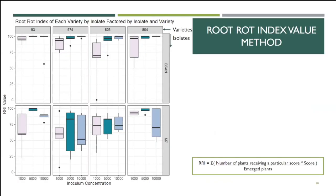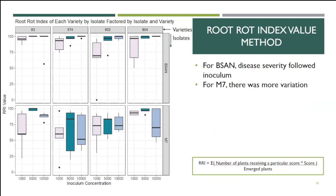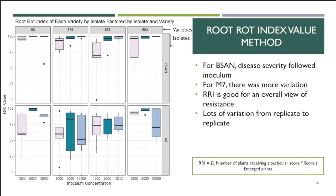I also have my root rot index values. Again, we tended to see the most disease at our highest dose and the least at the lowest, though one isolate was doing wonky things. The root rot index value is really good for an overall picture of resistance — it's done at the end of the experiment so you know how everything fared. There is a lot of variation as evident by the size of some of these data points. If everything dies, then it looks perfect, so there seems to be missing information. Also, this doesn't really capture the fact that for some varieties, everything died on like day two, and for some varieties, things didn't die until day 14.